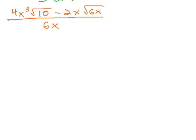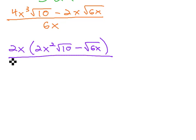However, before we reduce, remember it's important we factor first. We can only reduce factors. So in the numerator, you'll see there's a greatest common factor of 2x, leaving behind 2x squared root 10 minus the square root of 6x, all over 6x.